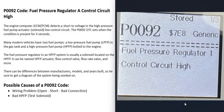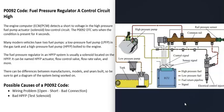Many vehicles nowadays have two fuel pumps: a low pressure fuel pump inside the gas tank, and bolted to the engine is what's called the high pressure fuel pump. When you get this P0092 code, the computer is seeing a problem with the fuel pressure, mainly with the fuel pressure regulator.